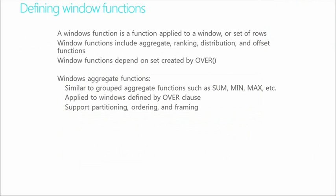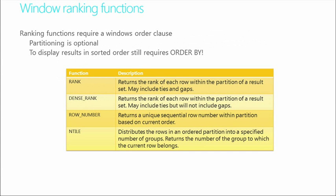Windows functions are applied to a window or set of rows. They can include aggregate, ranking, distribution, even offset functions we introduced earlier. These are similar to grouped aggregate functions such as sum, min, max. They're applied to windows defined by the over clause — OVER in uppercase — so we can recognize that as a clause when working with Windows functions. They support partitioning, ordering, and framing of content in the Windows world.